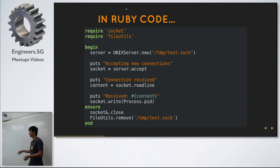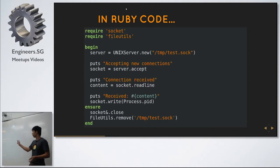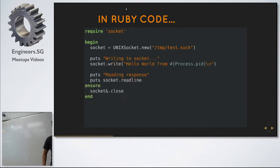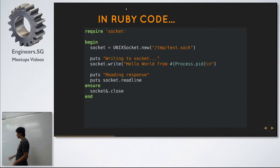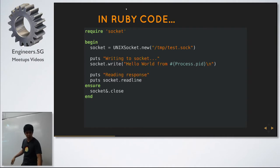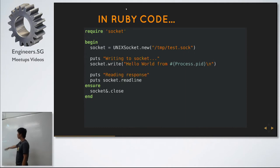To demonstrate exchanging data between two processes, I'll write my process PID back to the connecting socket. At the end you have to close the socket, otherwise you'll be leaking a file descriptor. Then I remove the socket file so I can keep reusing the script without manually cleaning it up. On the client side, you call UnixSocket.new and give it the same path the server uses — it returns the same class of UnixSocket object.